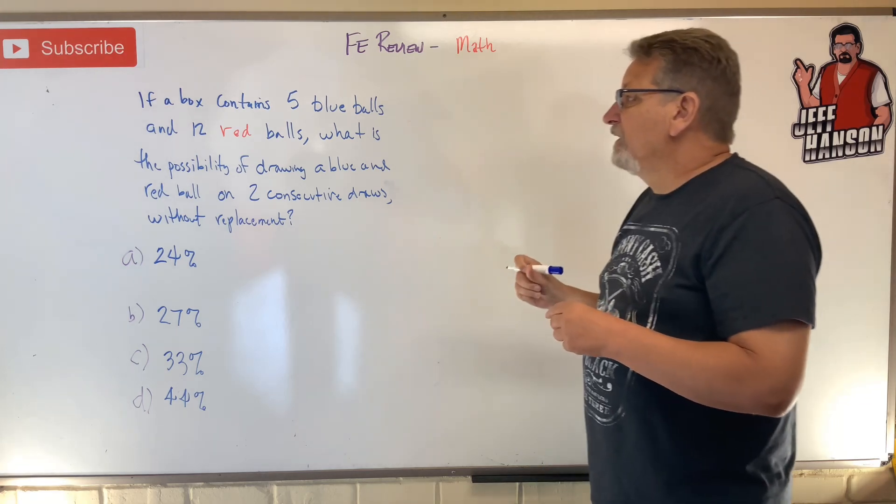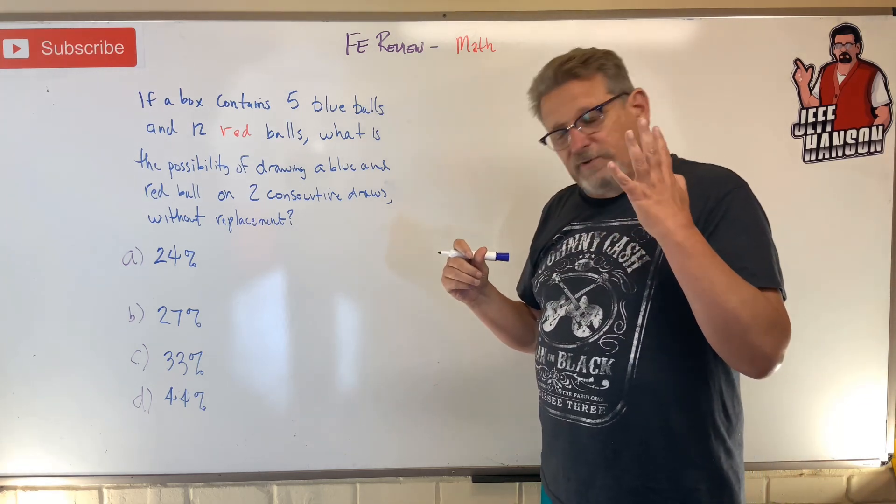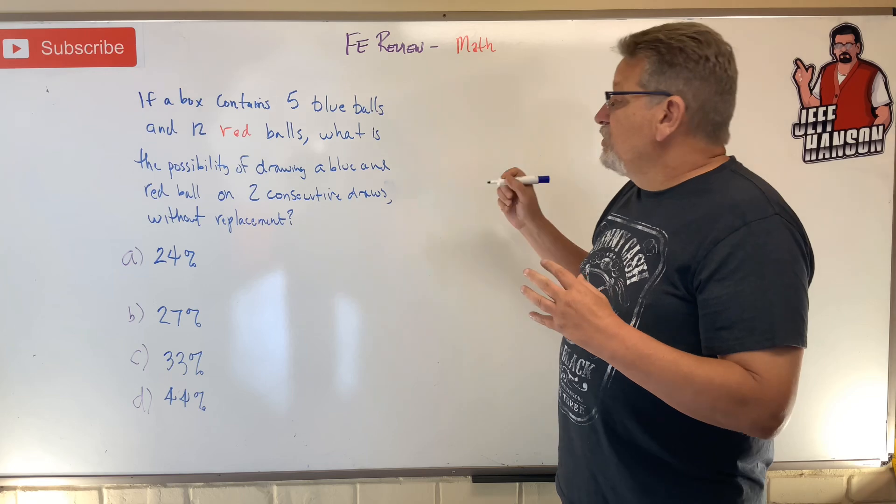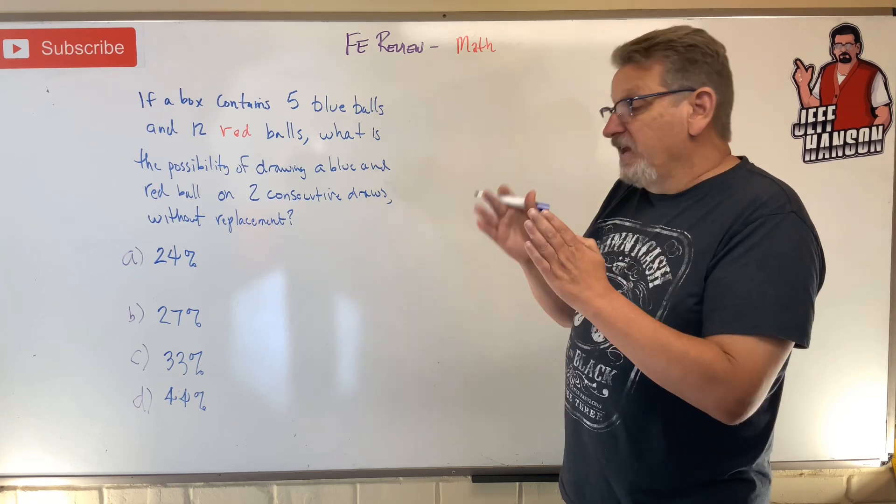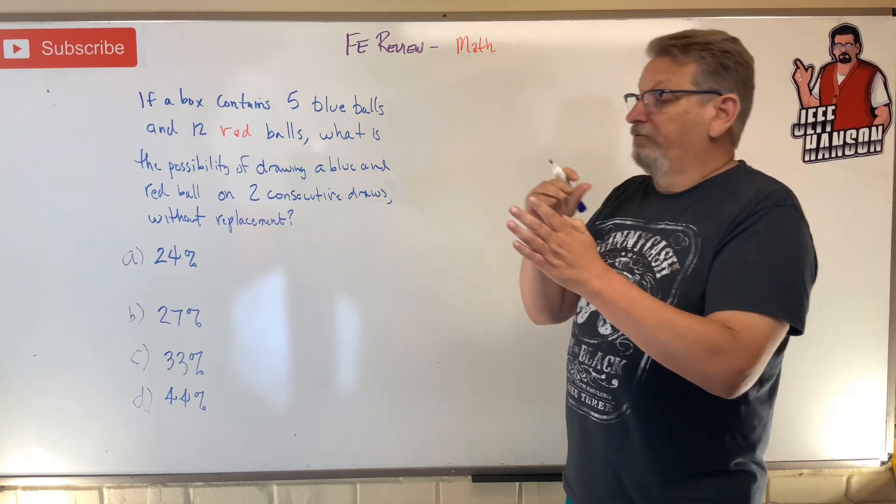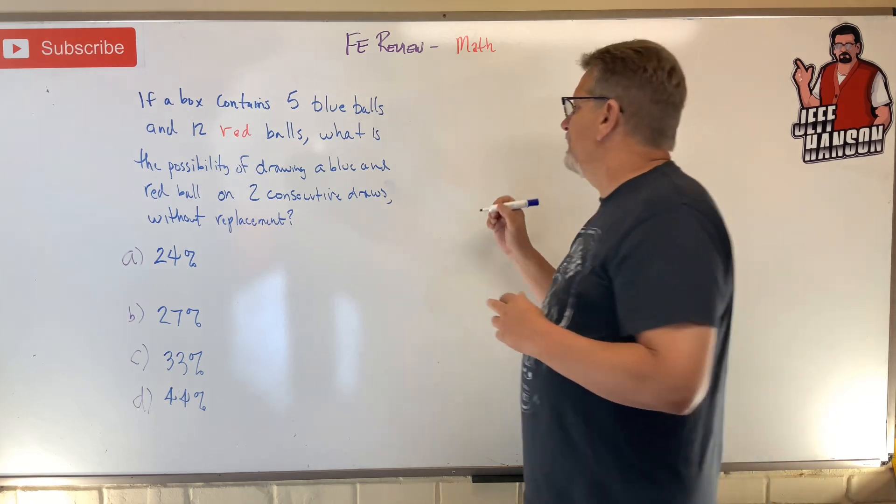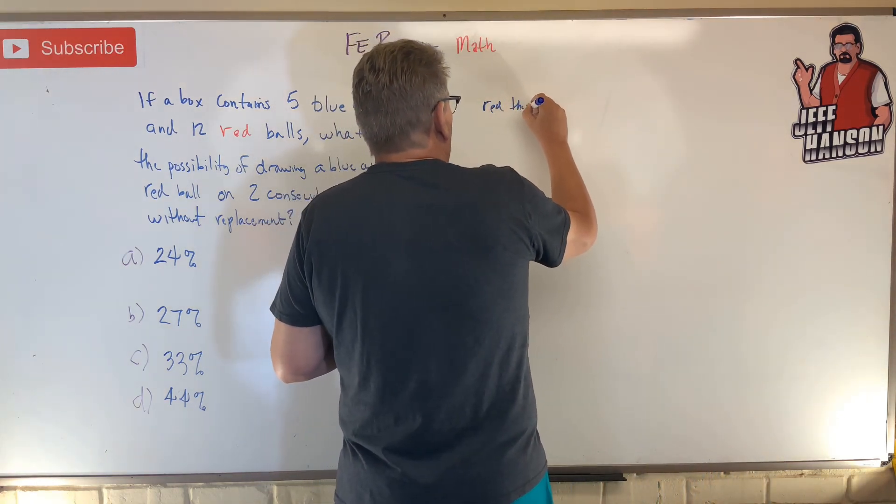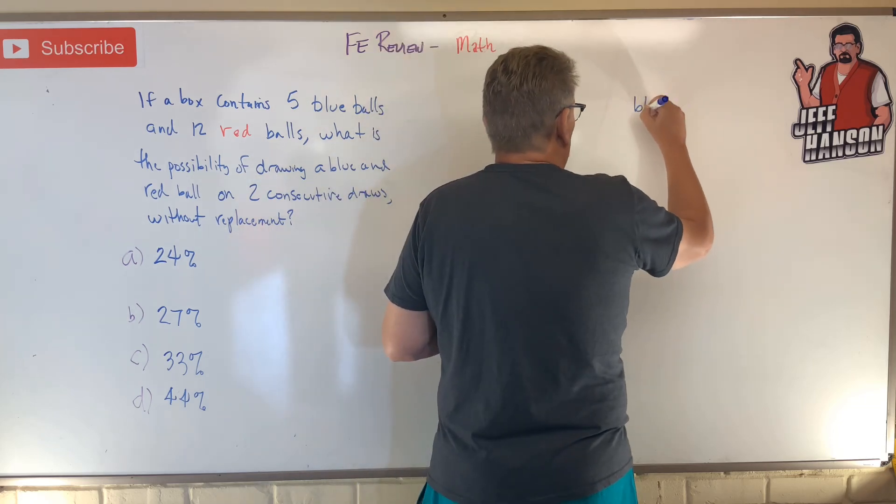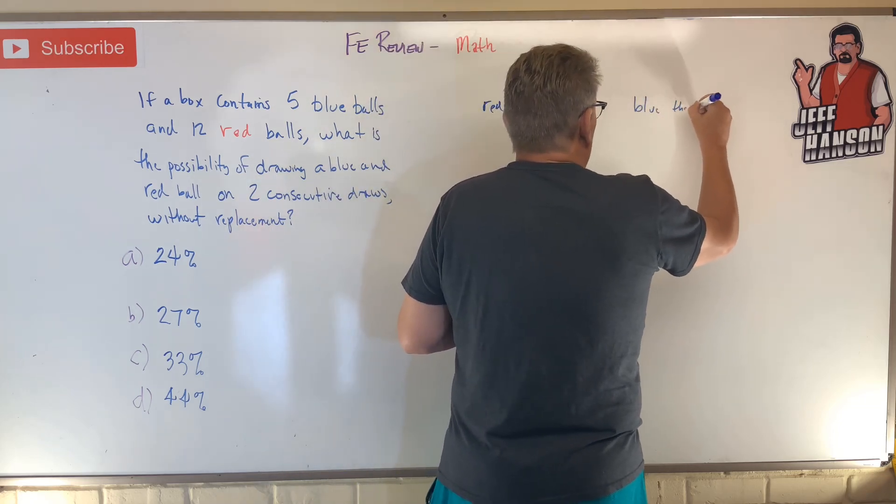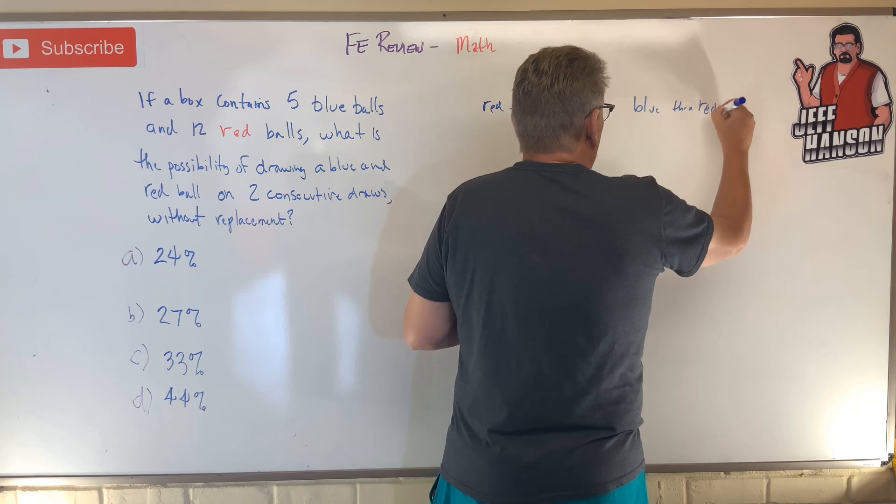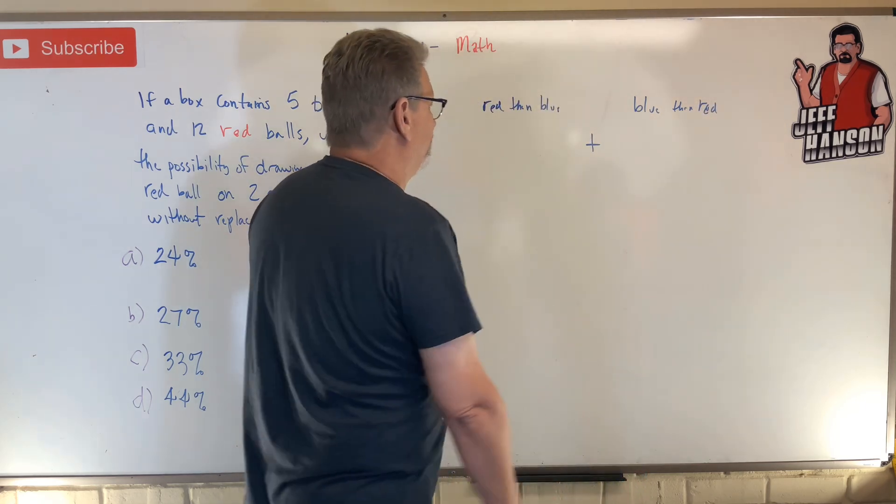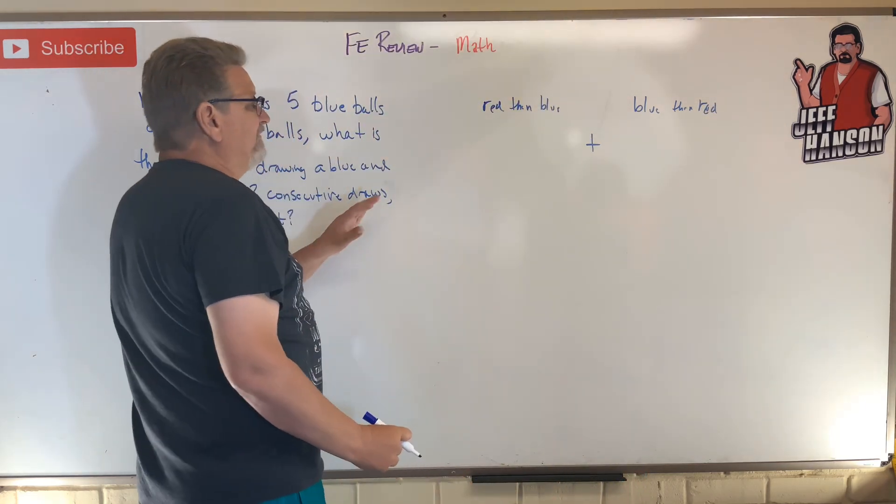All right, here's how you do it. You can have a red ball then a blue ball, or you can have a blue ball then a red ball. So we'll do both of those. We'll do red then blue, and over here we'll do blue then red. We have the possibility of both of those things happening.